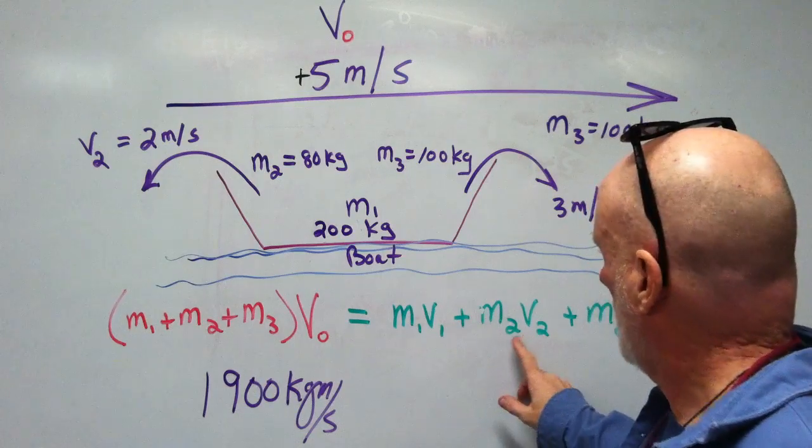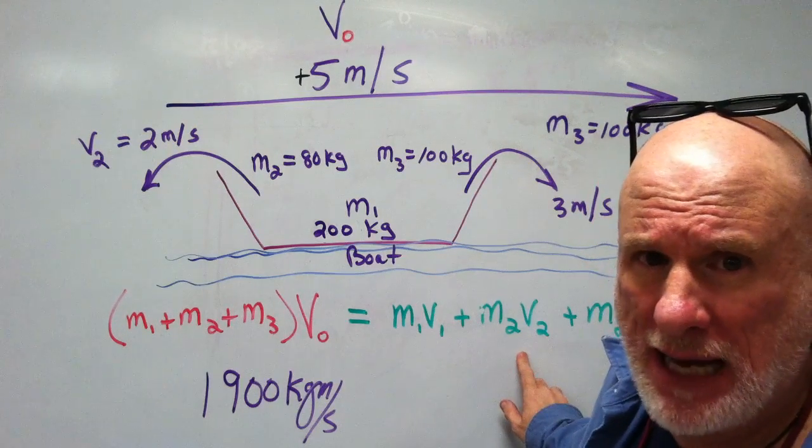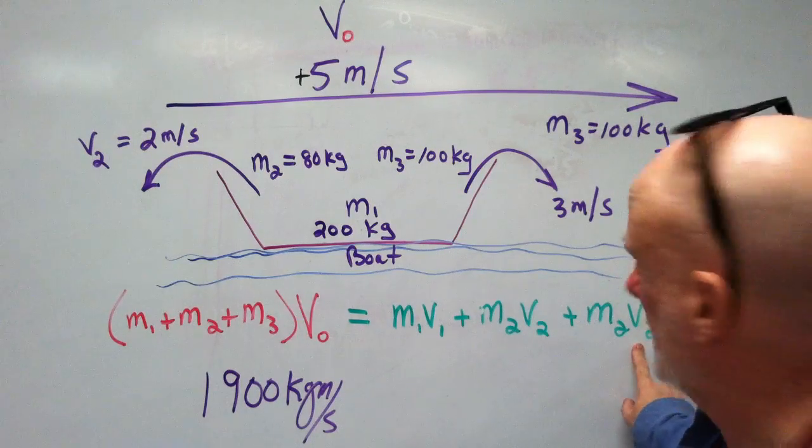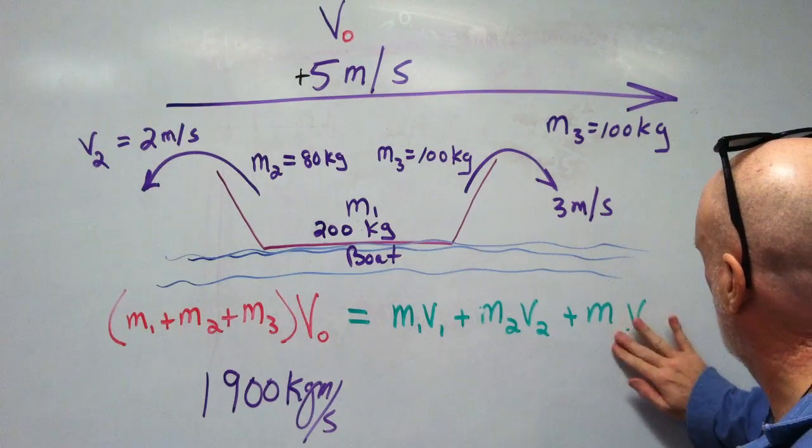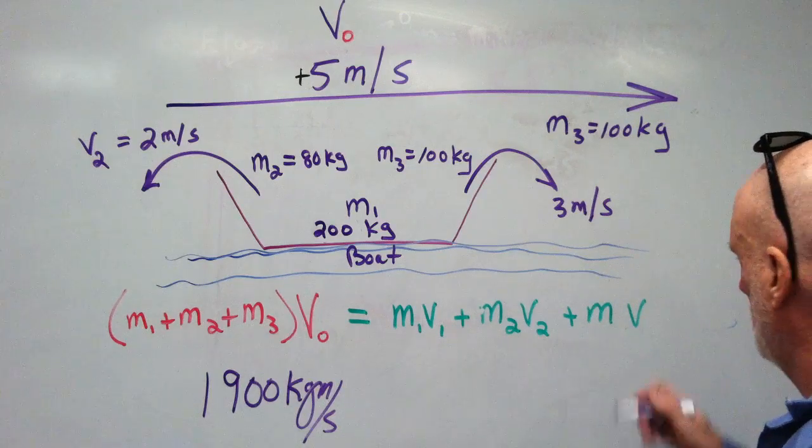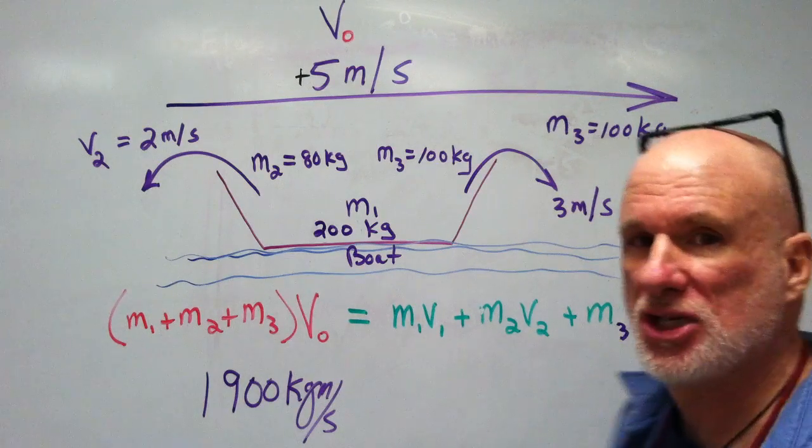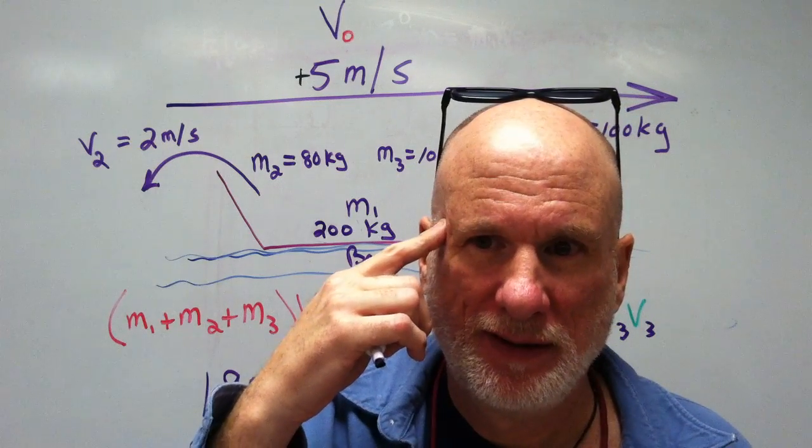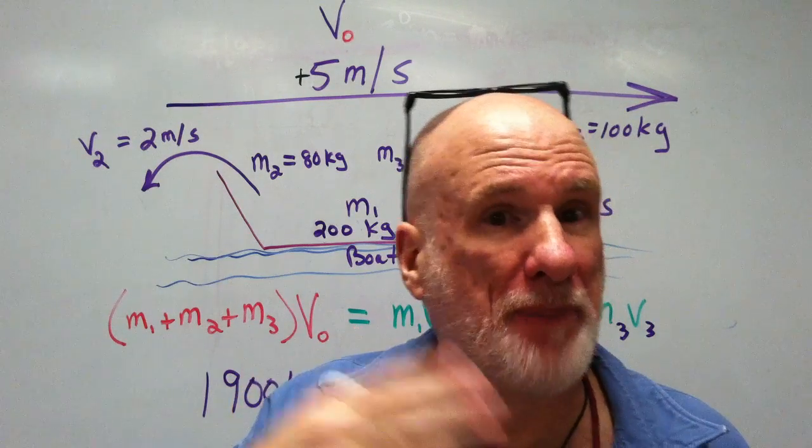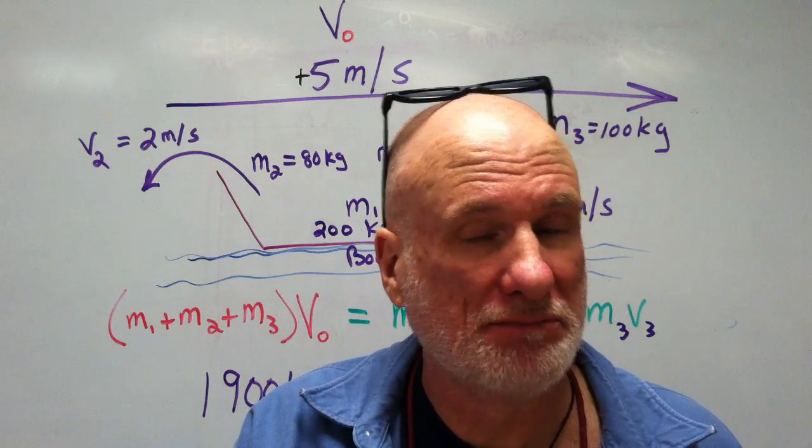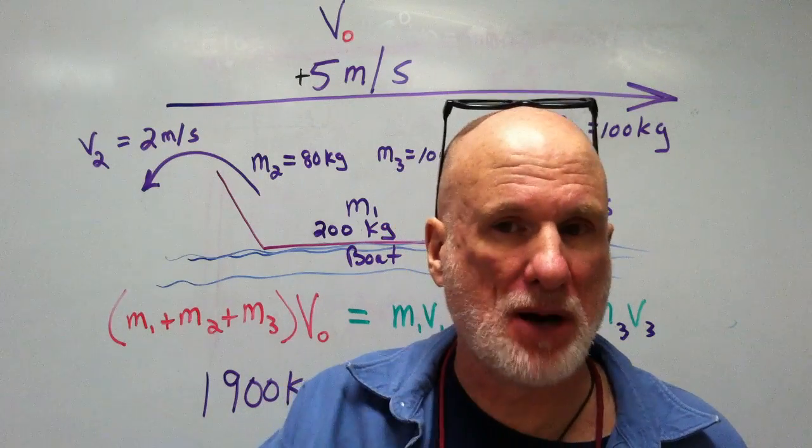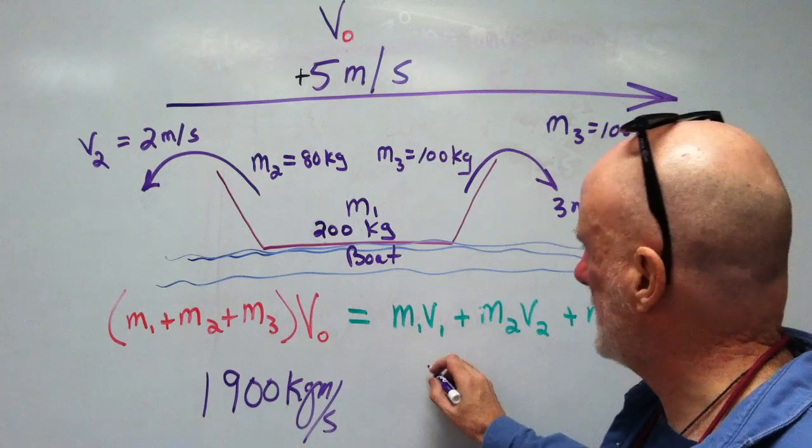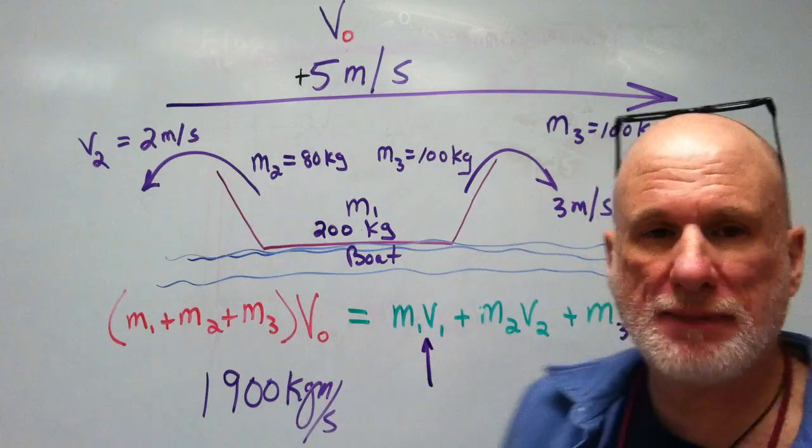Now, I know my mass and my velocity, or my friend's mass and my friend's velocity, my mass and my velocity, and I want to know the boat's final velocity. It's easy, isn't it? The boat's final velocity. So the boat's final velocity will be that, V1.